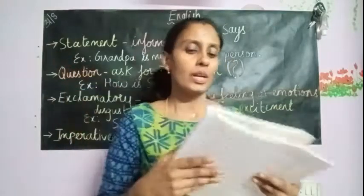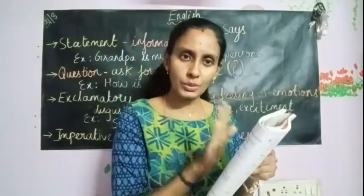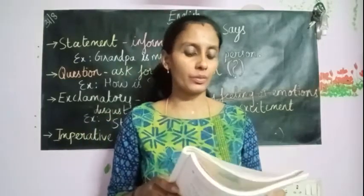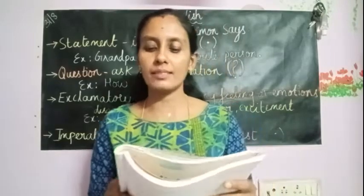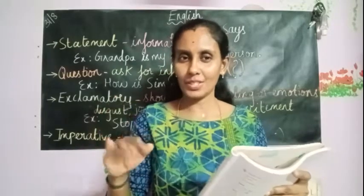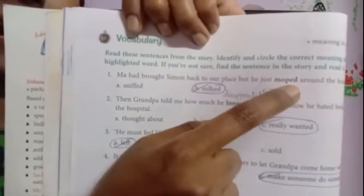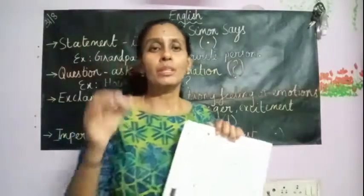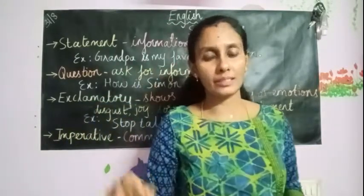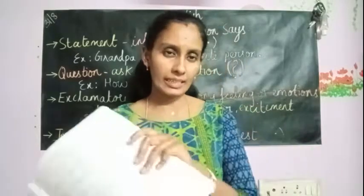This exercise is called 'Meaning in Context.' What you are supposed to do: read these sentences from the story, identify and circle the correct meaning of the highlighted words. If you are not sure, find the sentence in the story and read it. The highlighted words are darkened in the sentences. One word in each sentence is highlighted, and already three optional answers are given. You are supposed to tell me which is the correct meaning of the highlighted word.